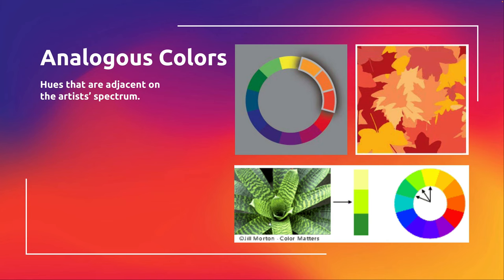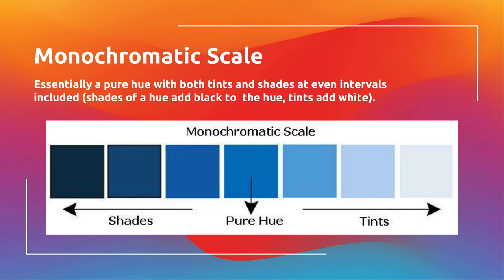This analogous color relationship happens in nature all the time. With this plant, it's technically analogous — you'd pick one green that matches, and then you have greens and yellows, potentially even pushing towards yellow-orange depending on how something looks in nature.